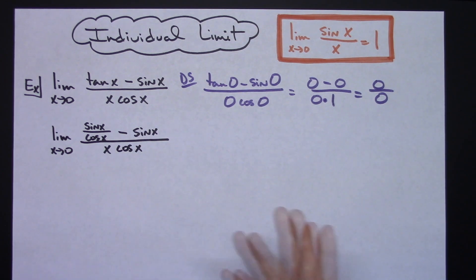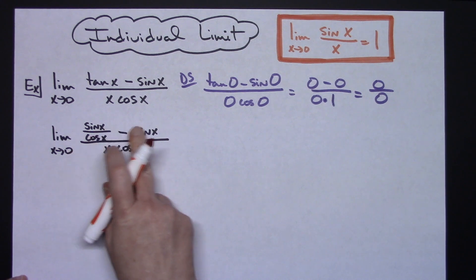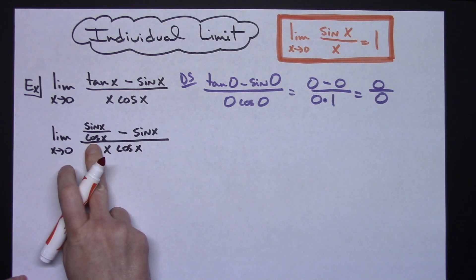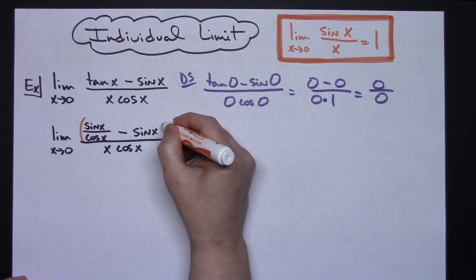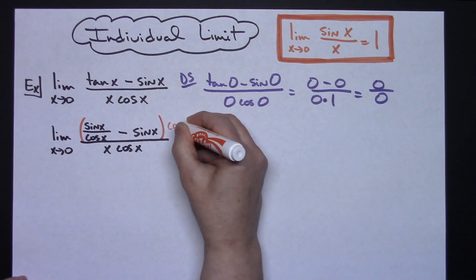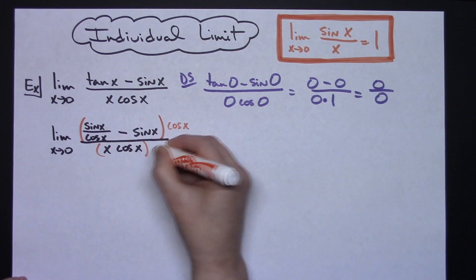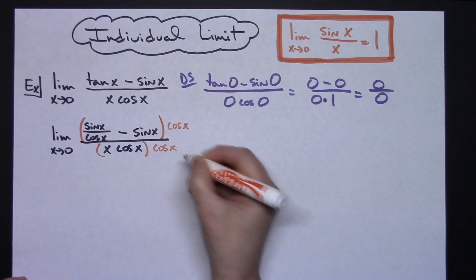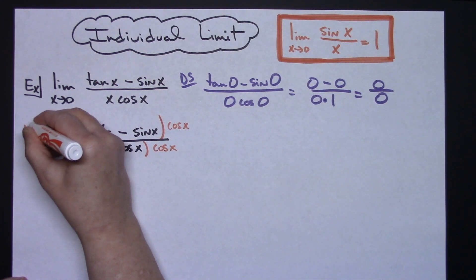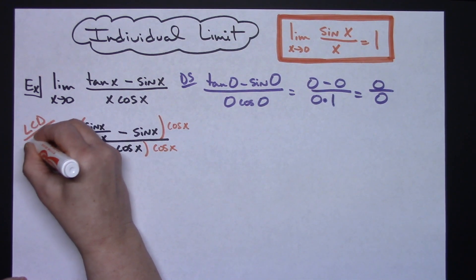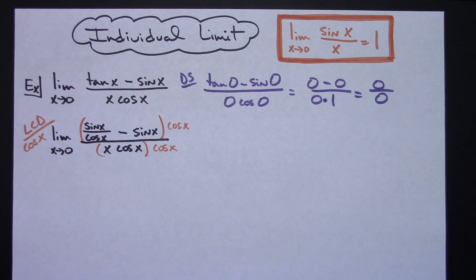Now I've created that complex fraction. Let's simplify it by multiplying through by the least common denominator. The least common denominator is cos(x), so I'm going to multiply the top and bottom by cos(x). As a reminder, the LCD is cos(x), that's why I'm doing that.